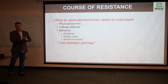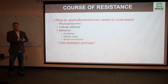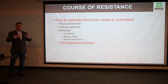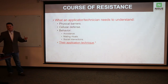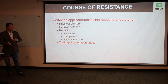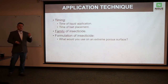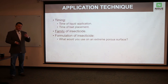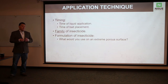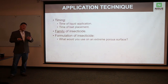Insects also have behavioral defenses — if you're using product A and the insect switches its behavior based on that chemistry, you're going to have resistance and failure. Mating rituals and social interactions matter too. Think about large super-colony ants requiring extensive scatter bait versus a strategic application for a small yellow jacket nest. Application technique and timing — for liquid or bait — are all related to the formulation. For a porous surface, a wettable powder may be beneficial.